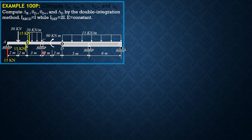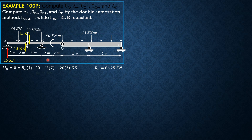By action-reaction, we transmit 15 kilonewtons to the right at B downward. Next, we consider BCD to solve for the reaction at C. Assume RC is upward. Taking summation of moments about D equals zero, clockwise positive: RC times 4 plus 90 minus 15 times 7 minus 20 times 3 times 5.5 equals zero. Solving, RC is 86.25 kilonewtons.